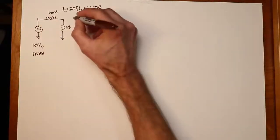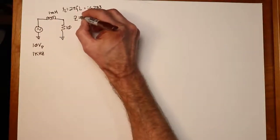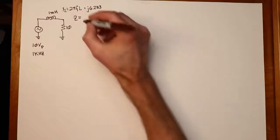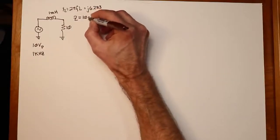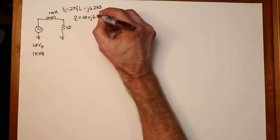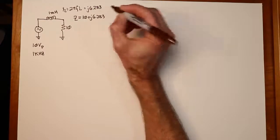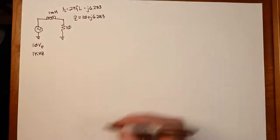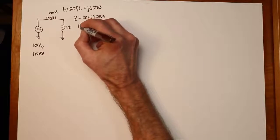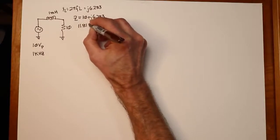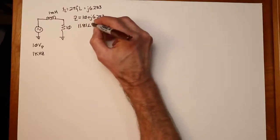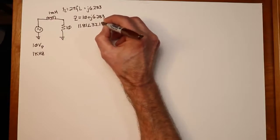Now this is just a series circuit. So the system impedance is simply 10 plus j6.283, rounding that off a little bit. If we put that in polar form, that's equivalent to 11.81 magnitude at an angle of 32.1 degrees.